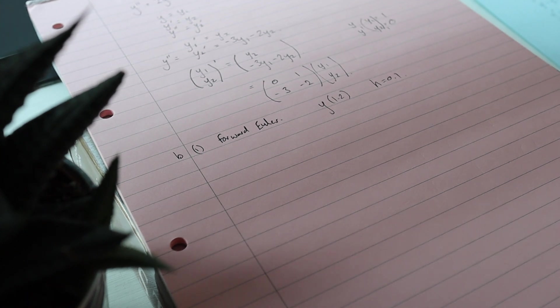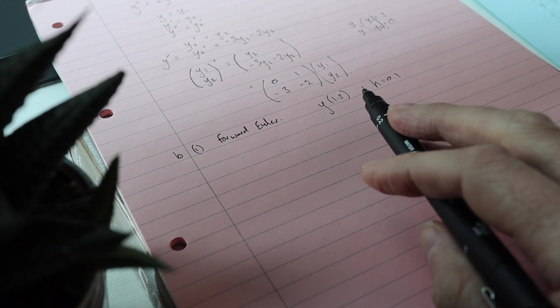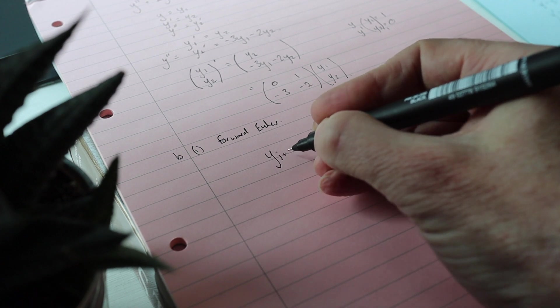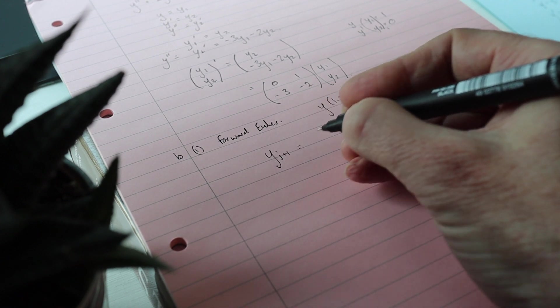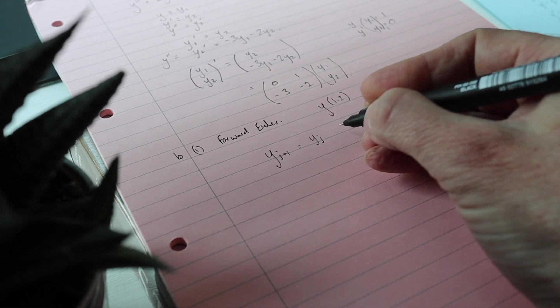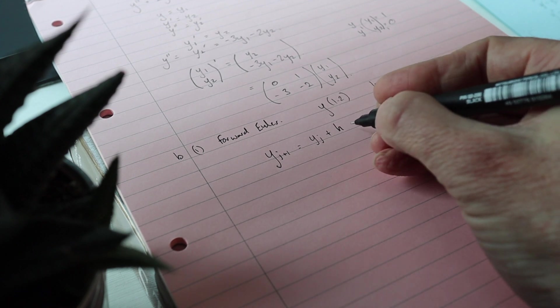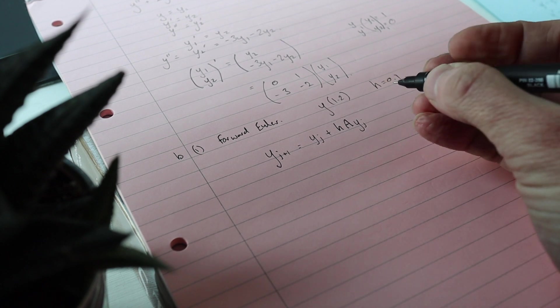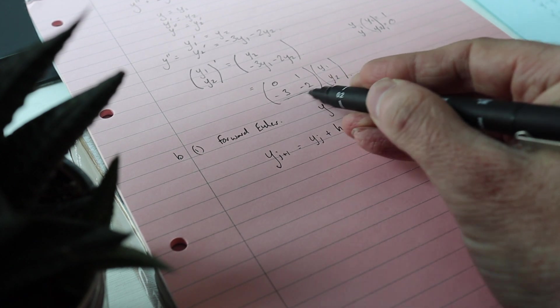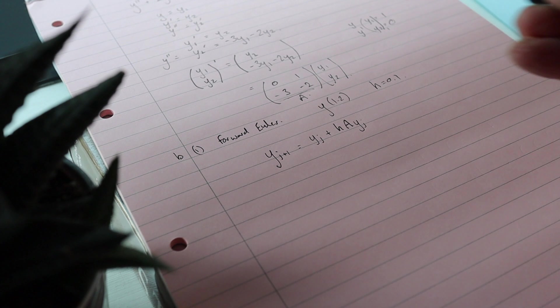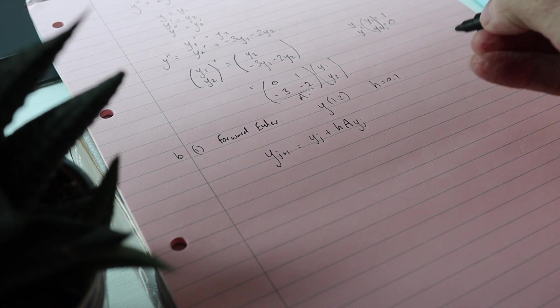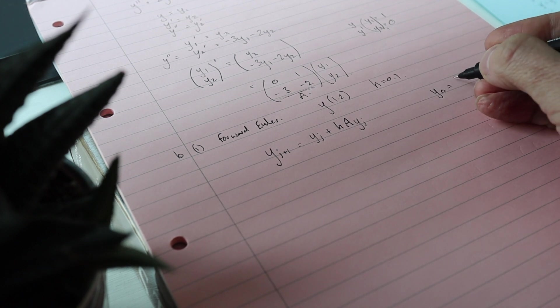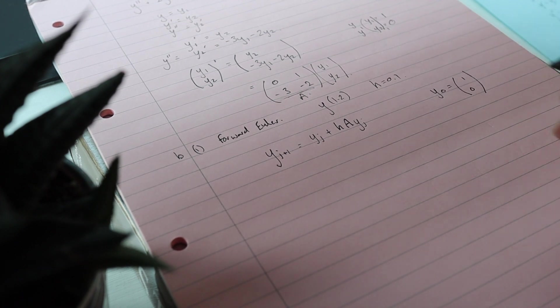I'm going to use the forward Euler with h is 0.1 and we just need to remember that y j plus 1, the next approximation of y, is the previous approximation of y plus h times A times y j again, and this is A here. Now I know a first approximation, a first guess is 1, 0.